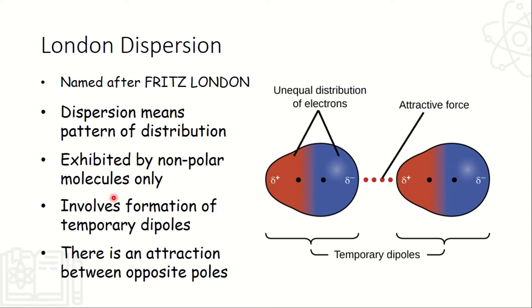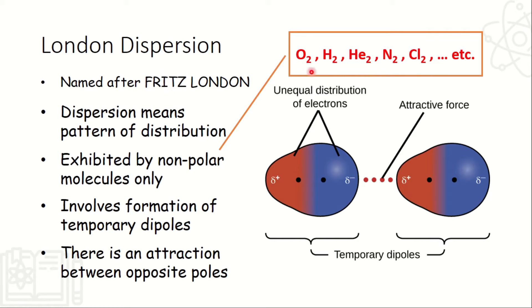Ano ba yung mga non-polar molecules? Yan yung merong electronegativity difference na mababa, 0 to 0.5. Example are O2 — same atom yung nag-form ng molecule ng O2, so 0 yung electronegativity difference niya, therefore that is a non-polar molecule. Parehol din ng H2, HE2, N2, CL2, and so on — mga molecules na na-form ng similar atoms. Originally, itong molecule na to, equal dapat yung distribution ng kanyang electron, kaya lang dahil may involve siya in the bonding with another molecule, magkakaroon ng adjustment yung kanyang electrons. Gagalaw yung electrons niya papunta dun sa isang pole, magkakaroon tayo ng formation ng temporary dipoles.